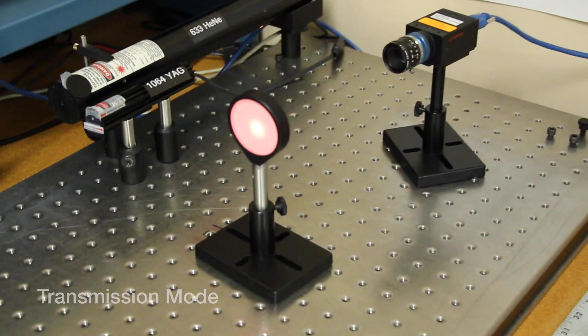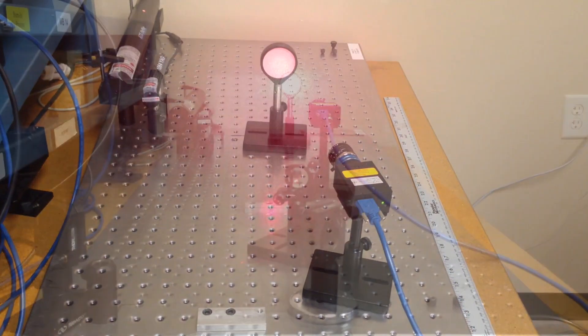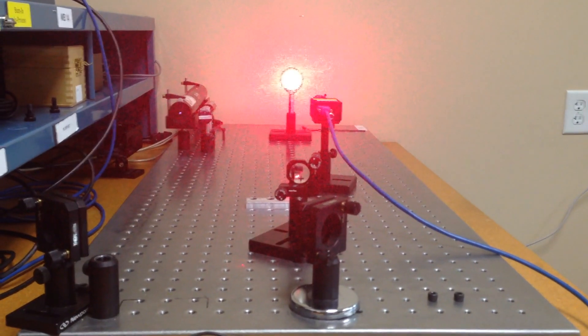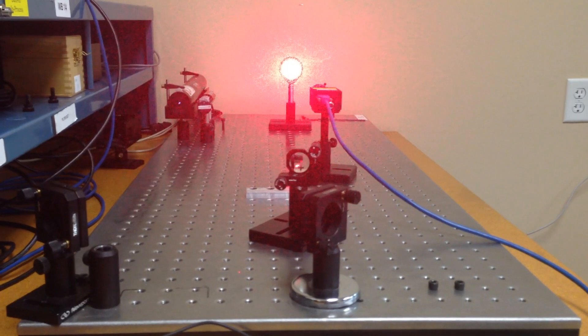Transmissive targets can be used in transmission or reflection mode. In either configuration, care should be taken that only the reflected beam and not the transmitted beam is imaged by the lens.